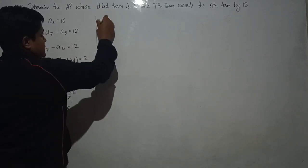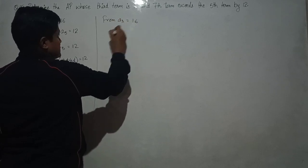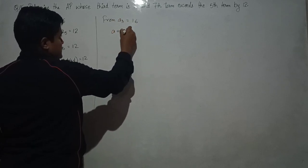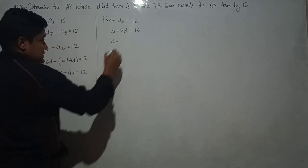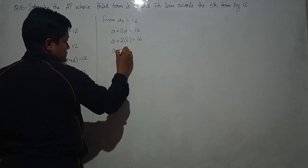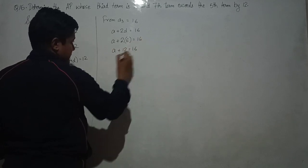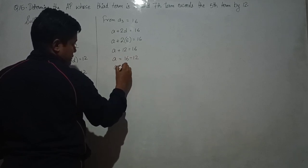So from A3 equals to 16, A plus 2D equals to 16. Or A plus 2D is A plus 12. 16 minus 12, A equals to 4.